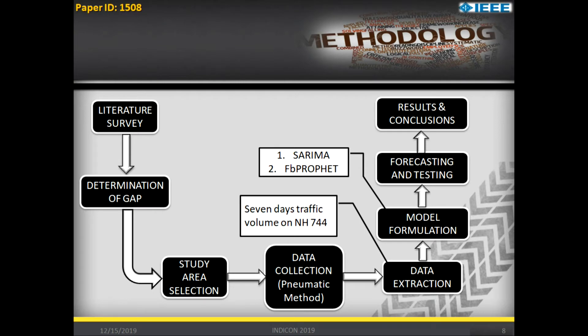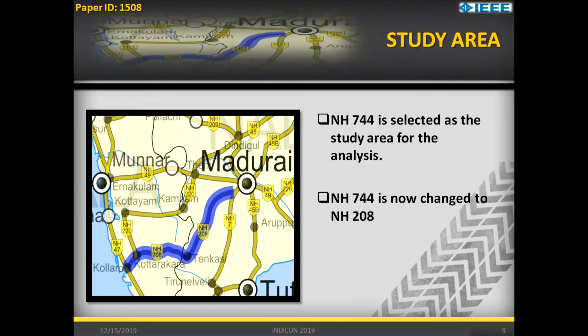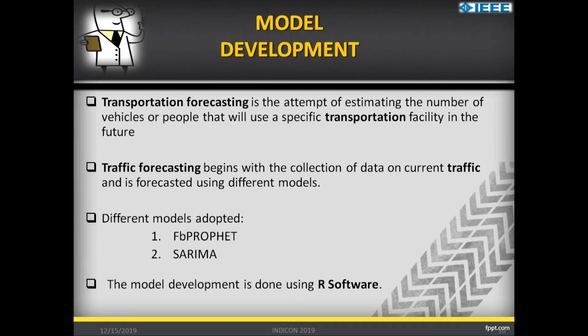This is our methodology covering study area and data collection. The study area is highway NS 744, near Kolam in Tamil Nadu, recently converted to NS 208. Traffic forecasting, as already discussed, is a prediction of the futuristic traffic coming on the road. In our project, it begins with data collection and then formulating the model. The models we use are FB Prophet — the Facebook Prophet model — and SARIMA, which is Seasonal ARIMA.